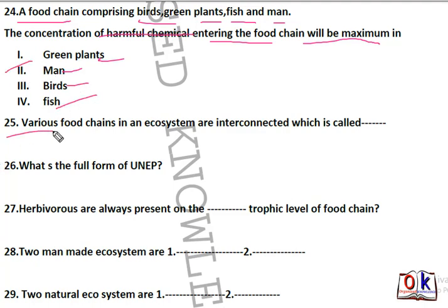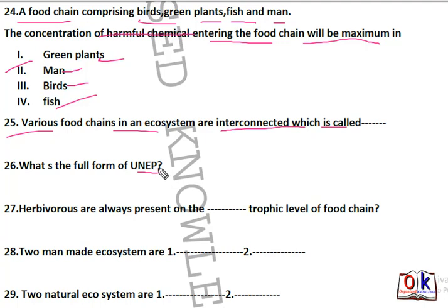Question number 25: various food chains in an ecosystem are interconnected. All food chains are interconnected with each other, and this interconnection is known as food web. Food web will be the right answer. Question number 26: what is the full form of UNEP?